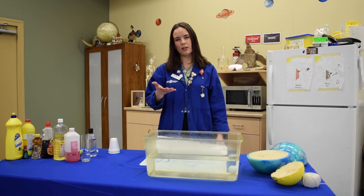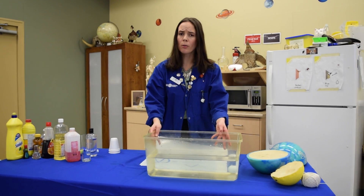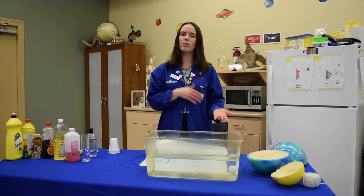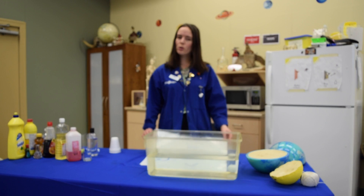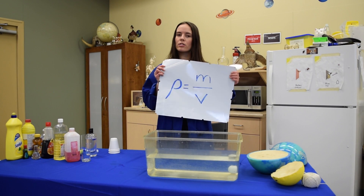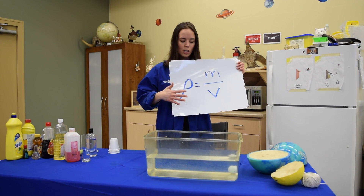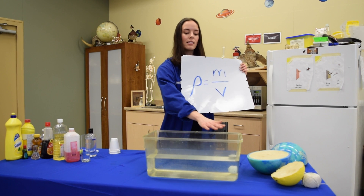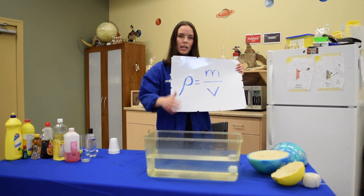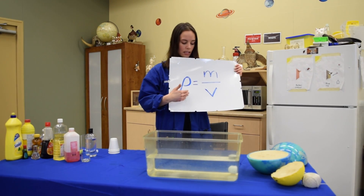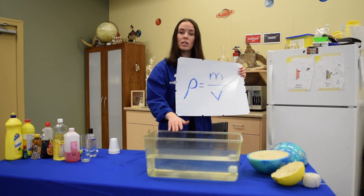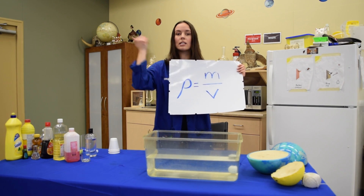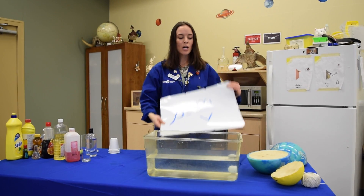Now it's your turn. I want you to try this experiment at home — gather a bunch of supplies and see whether they float or sink. You can refer back to your density equation to tell you this. If the density of something equals one, that means it has the same buoyancy as water. If your density is higher than one, your object will sink — like the golf ball. If your density is lower than one, it's going to float.